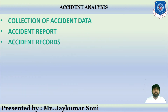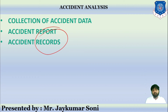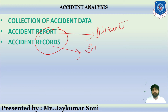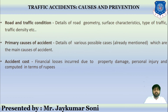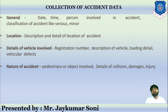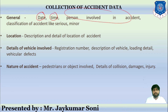Now let us discuss accident reports and accident records — both are different things. When collecting accident data, we collect: date of accident, time of accident, persons involved, classification of accident, and type of accident such as serious, minor, major, or moderate.